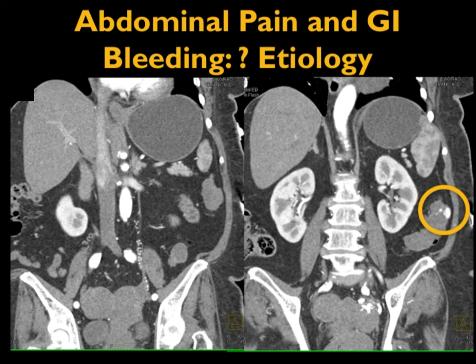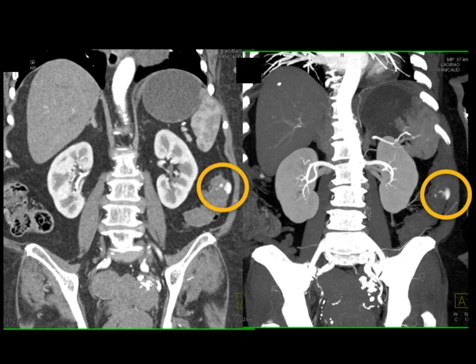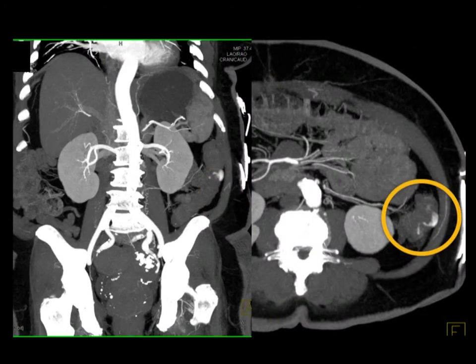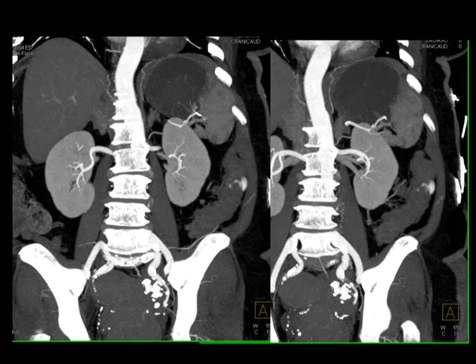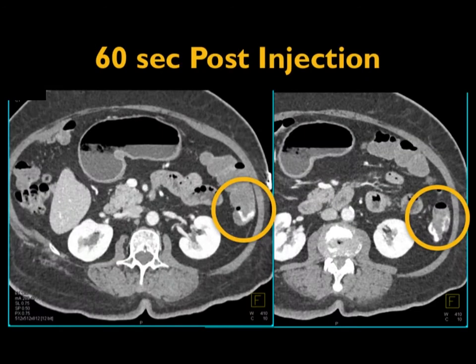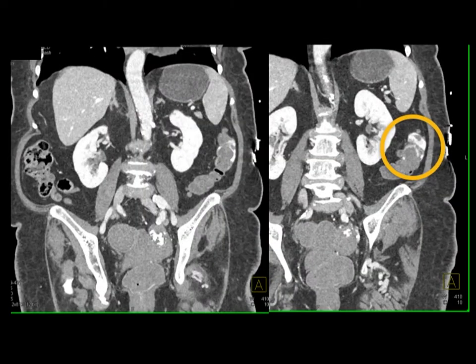Another example of GI bleeding. You can see very nicely the bleed in the descending colon — diverticulitis. Nicely shown in the coronal view and on the MIP. The MIP is often better. As you go a little bit later, you can see the bleed has increased on the axials and on the coronals. So again, dual phase imaging becomes very, very important.